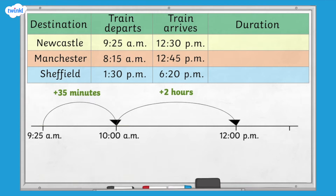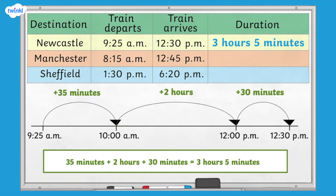Finally, we can jump 30 minutes to get to 12.30pm. The duration of the train journey to Newcastle is 3 hours and 5 minutes.